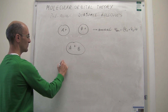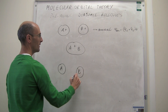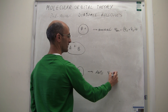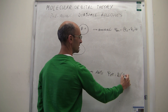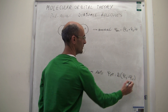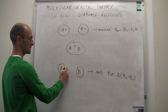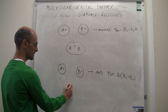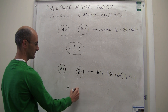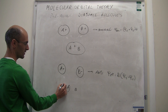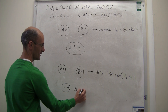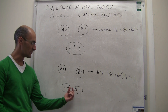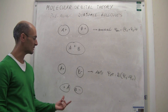The antibonding configuration uses the 1s orbital for atom A and the 1s orbital for atom B, but the linear combination now has a minus sign — so if the first wave function is positive, the second will be negative. This gives destructive interference. When you bring these two atoms together, the resulting electron density has a node in the middle — there are no electrons between the two atoms, and there will be no bonding. Instead, it's an antibonding situation.